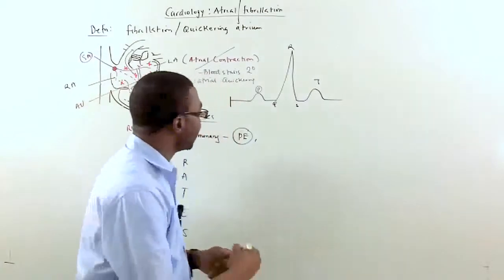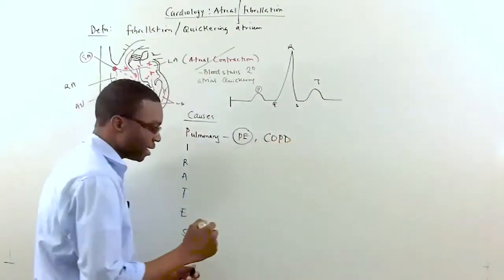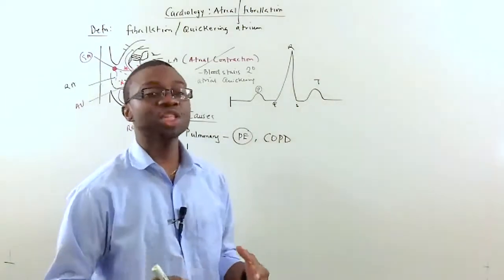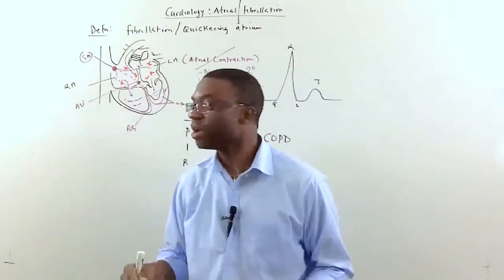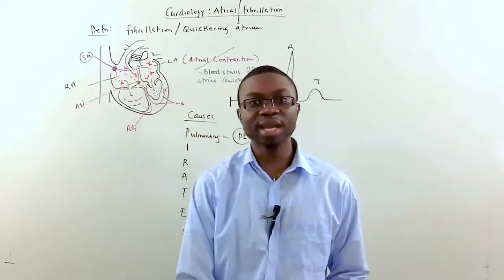Also, what other pulmonary diseases can cause atrial fibrillation? COPD. Chronic Obstructive Pulmonary Disorder. Patients with COPD develop a lot of hypoxic vasoconstriction in their lungs, which increase pulmonary pressures and also causes this patient...